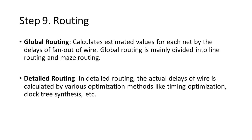Step 9: Routing. Global routing calculates estimated values for each net by the delays of fanout of wire. Global routing is mainly divided into line routing and maze routing. In detailed routing, the actual delays of wire are calculated by various optimization methods like timing optimization and clock tree synthesis.